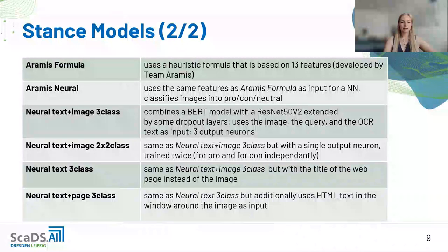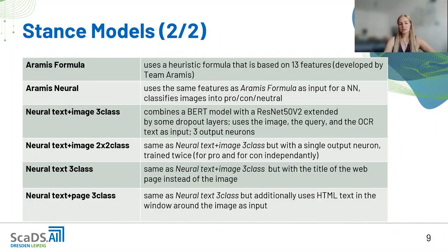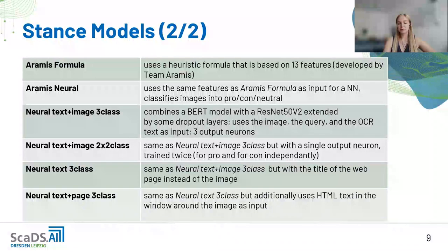We also developed four neural networks. 'Neural text plus image three-class' combines a BERT model with a ResNet-50 v2 extended with dropout layers, using the image, query, and OCR text as input with three output neurons. 'Text plus image two-times-two-class' uses the same architecture trained twice — once for pro and once for con — with one output neuron scoring fit to each side. 'Text three-class' uses the web page title instead of the image as input, making it purely textual. 'Neural text plus page three-class' additionally uses the HTML text in the window around the image.